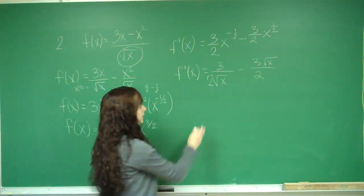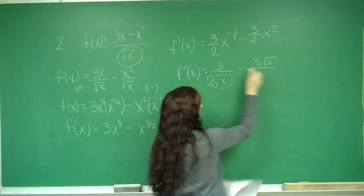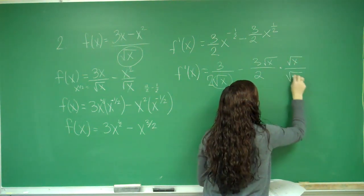Now I want to get a common denominator. They both already have a 2, so all I'm missing is the square root of x. I'm going to times this side by square root of x over square root of x.